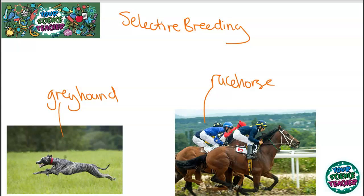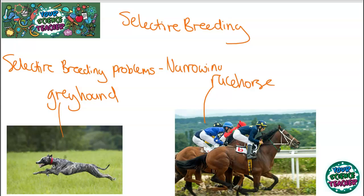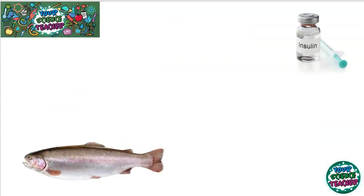Pugs didn't used to be around a few decades ago. They have been selectively bred to become incredibly small and incredibly cute. However, selective breeding does have a few risks associated with it because you are narrowing the gene pool. What this basically means is that if a genetic disorder gets into the genes, it will keep getting passed down as you are selectively breeding. With a narrow gene pool, you often take longer to adapt to changes in the environment, and disease can spread throughout the population. This has been seen through selective breeding of many different crop types.